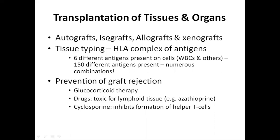In an allograft, the graft is taken from one human to another, or from one animal to another animal of the same species, and here the chances of rejection are present. In a xenograft, it is the transplantation of any organ from humans to animals or between animals of different species, and here the chances of rejection are very high.